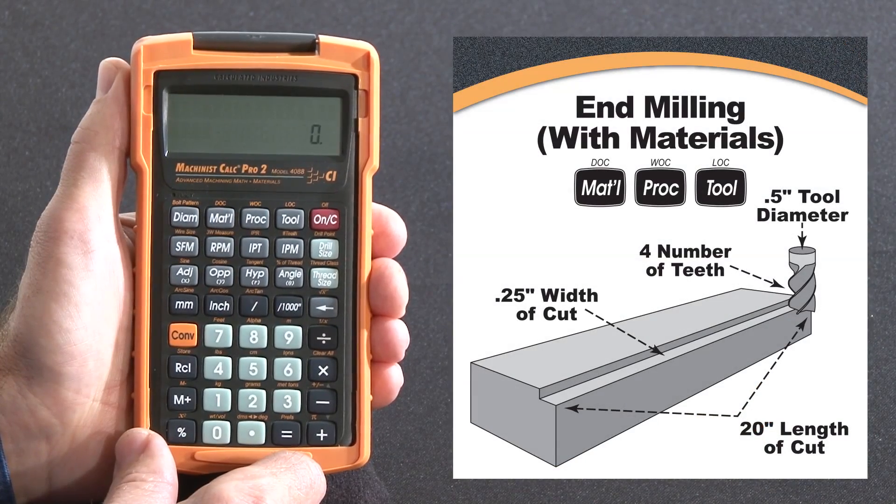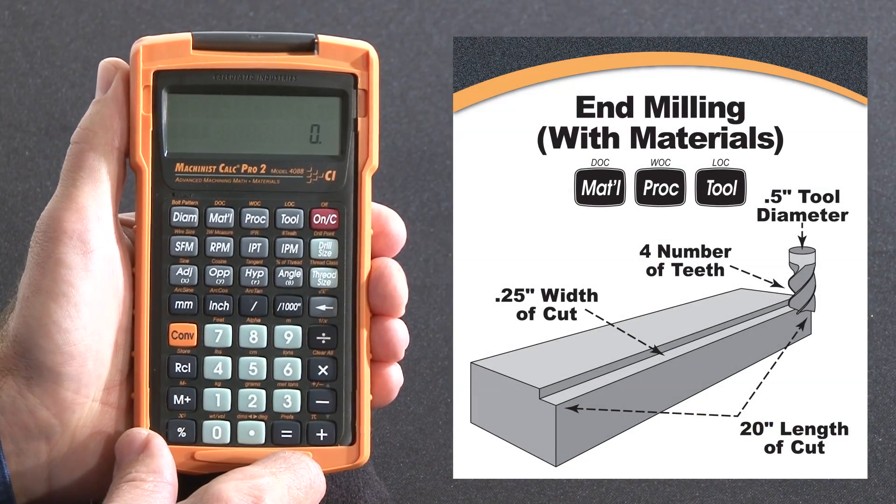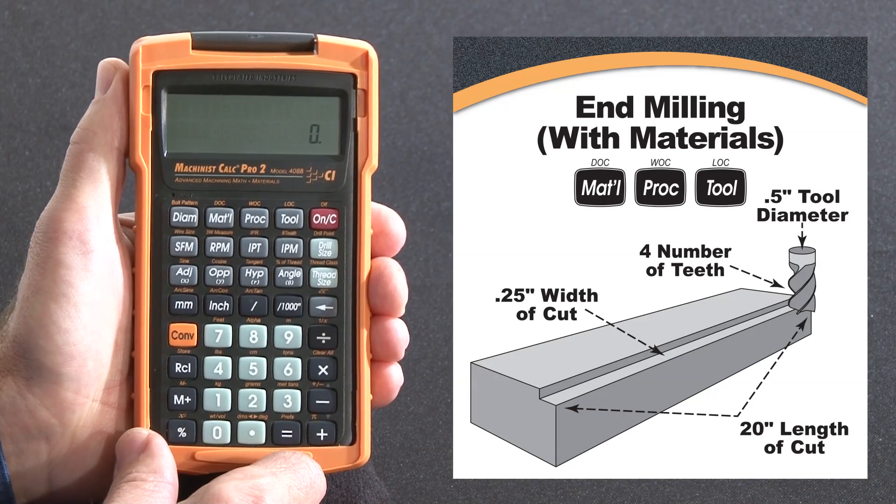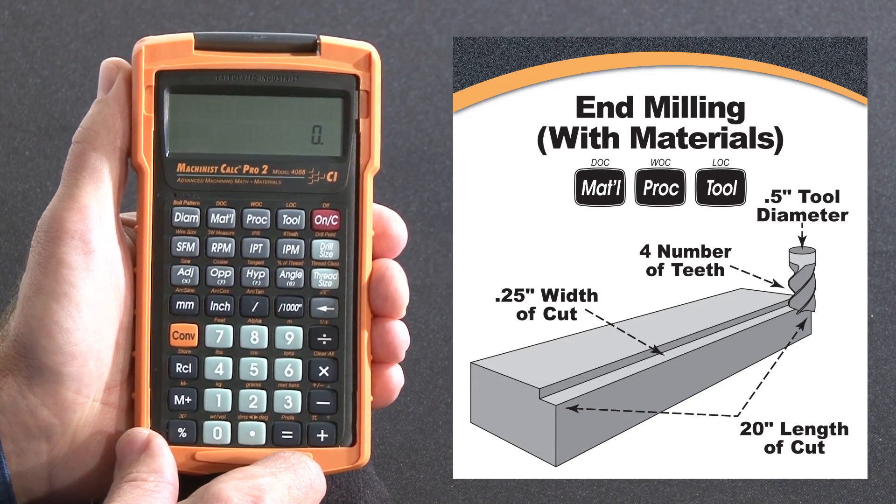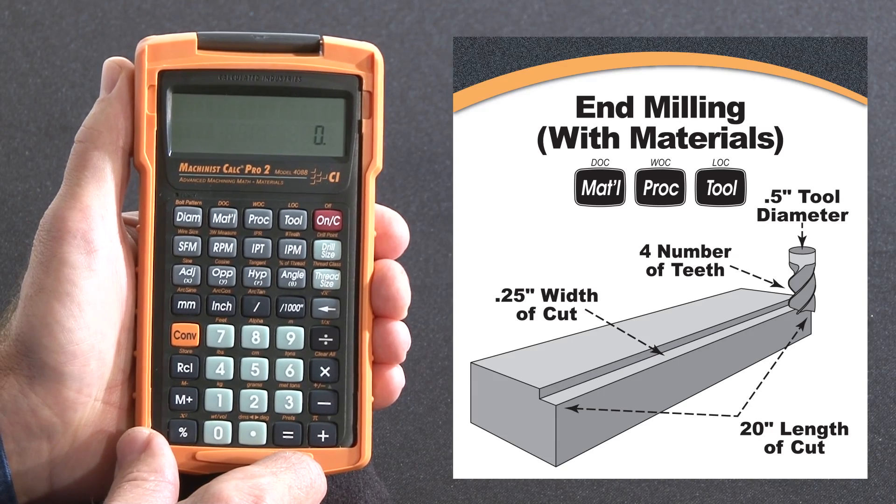Now let me show you how to solve RPM, feed rate, cut time, and material removal rate, spindle horsepower, and torque needed for end milling some 1020 low carbon steel with a four tooth high speed steel tool.